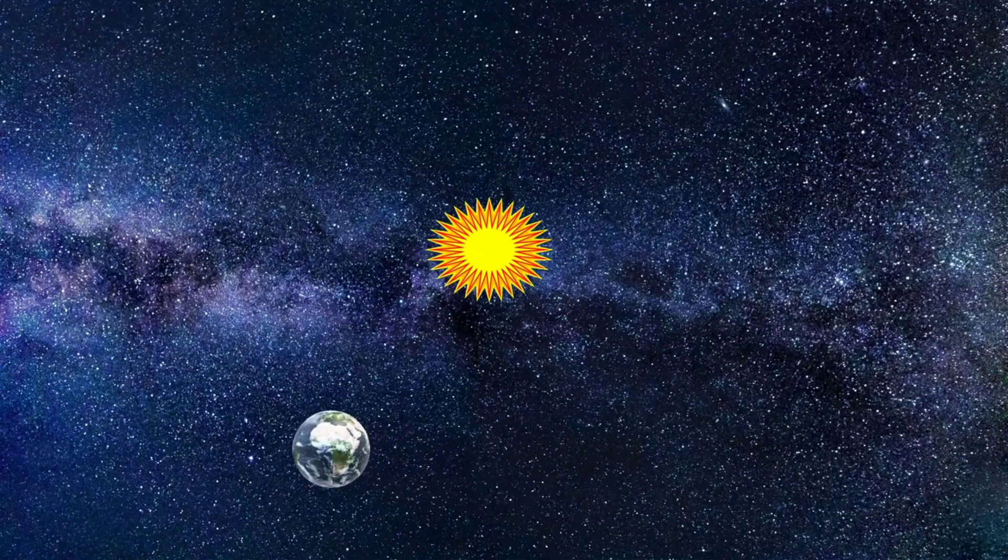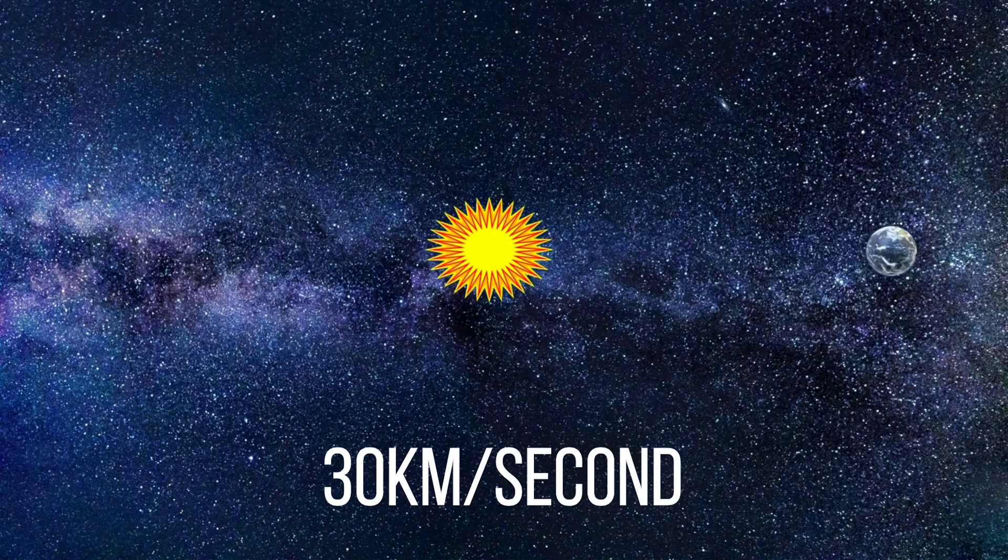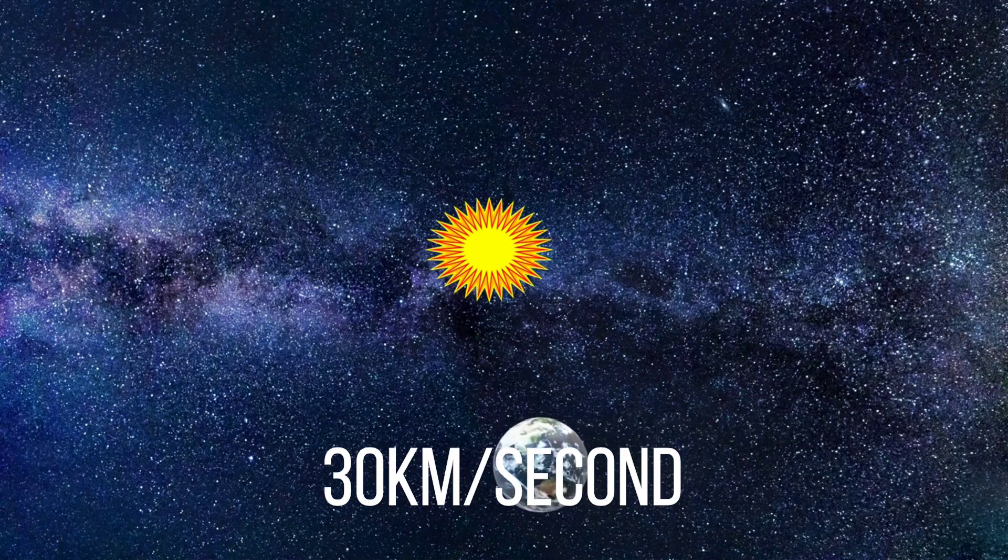We know that the Earth revolves around the Sun, and it covers this distance at a speed of 30 kilometers per second, or 67,000 miles per hour.